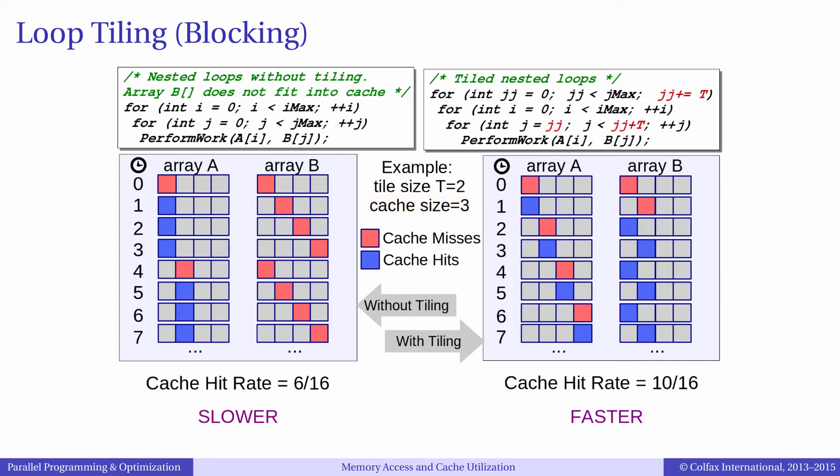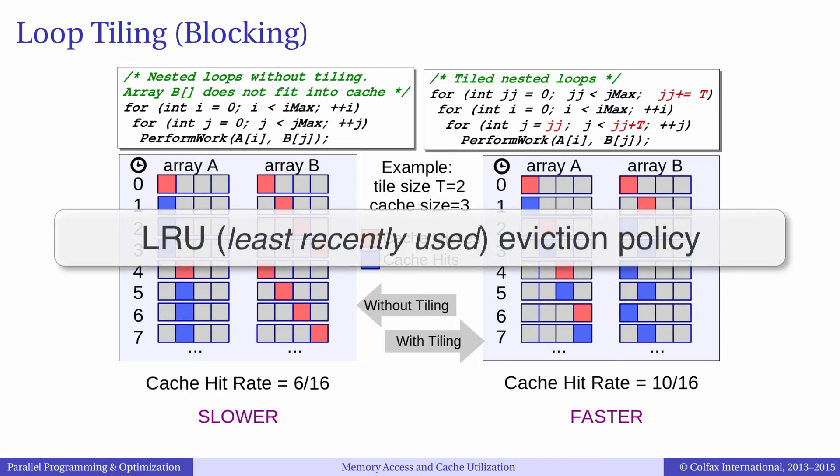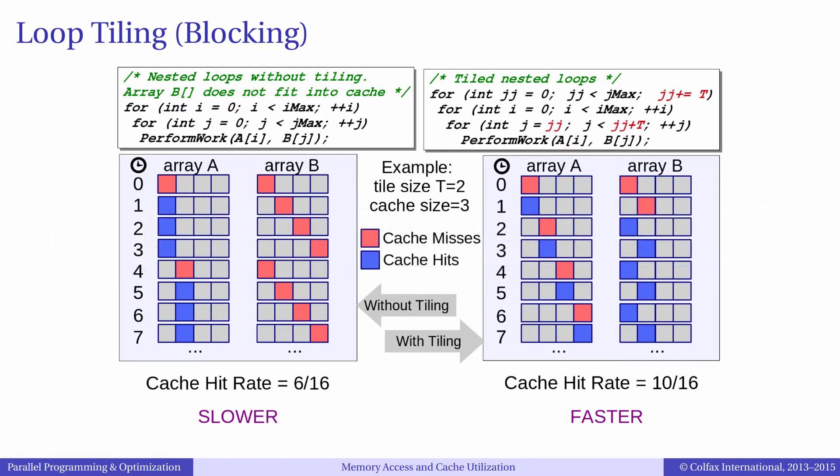The cache is similar to Xeon and Xeon Phi caches in that it has the least recently used, or LRU, eviction policy. It means that the cache will store every element fetched from memory, and when it fills up, it will evict the least recently used elements from cache to make room for new incoming elements.